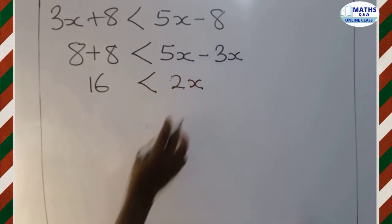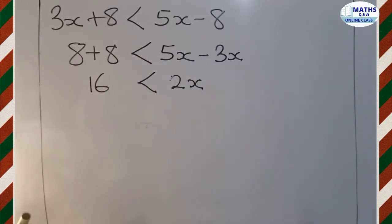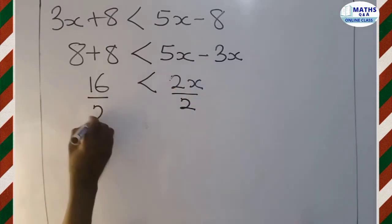We don't want 2x. We want x. We are making x the subject. So since this 2 is multiplying the x, you will have to divide. So you divide this side by 2. And you do the same thing to this side.